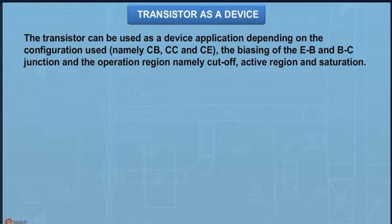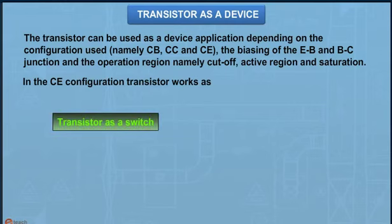The transistor can be used depending on the configuration (CB, CC, and CE), the biasing of the E-B and B-C junction, and the operation region: cutoff, active region, and saturation. In the CE configuration, the transistor works as a switch and as an amplifier.